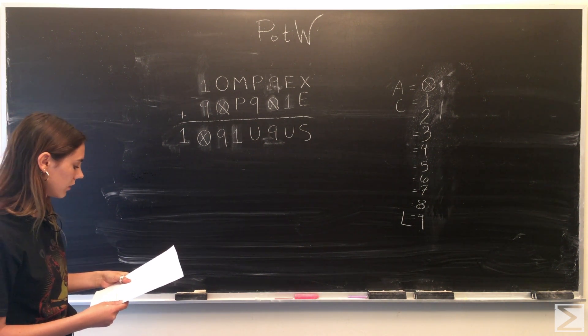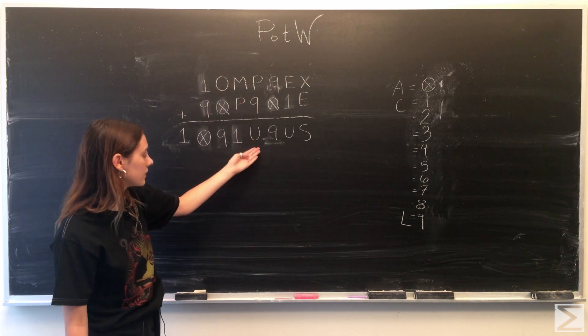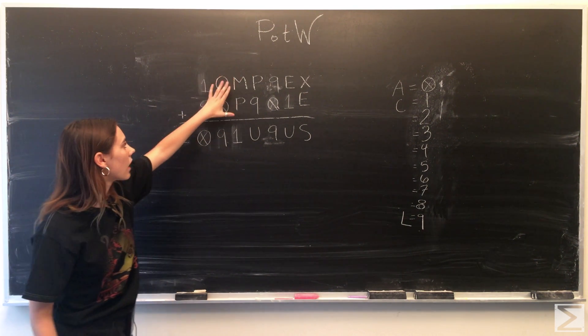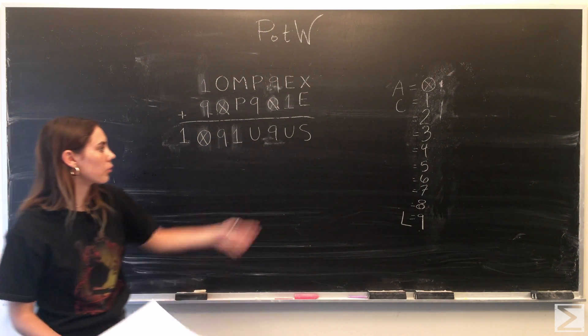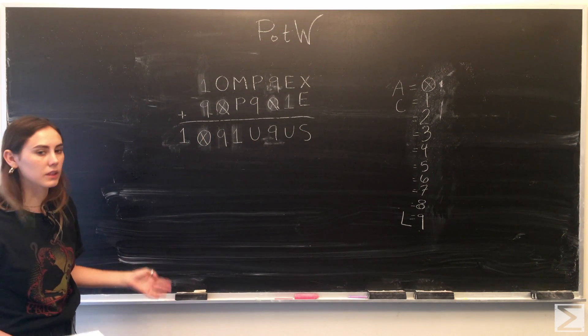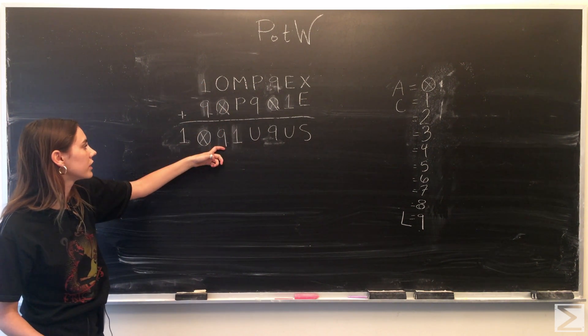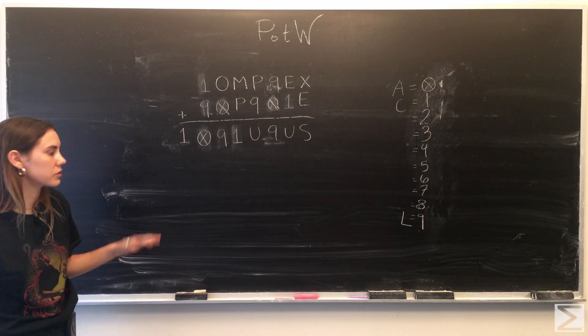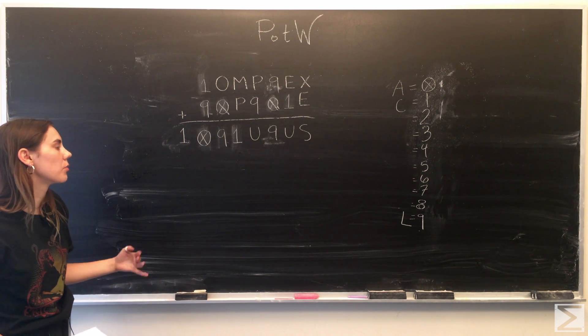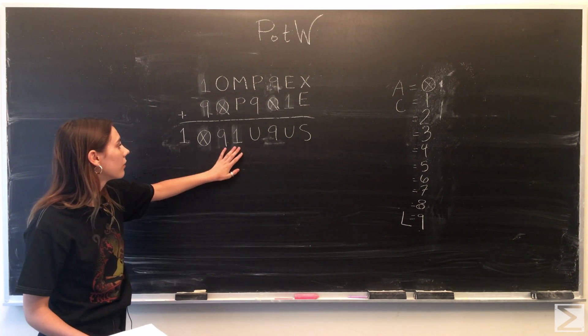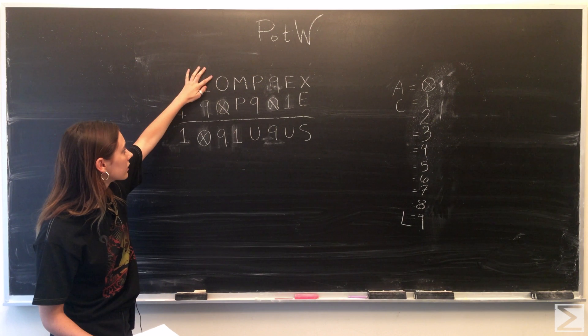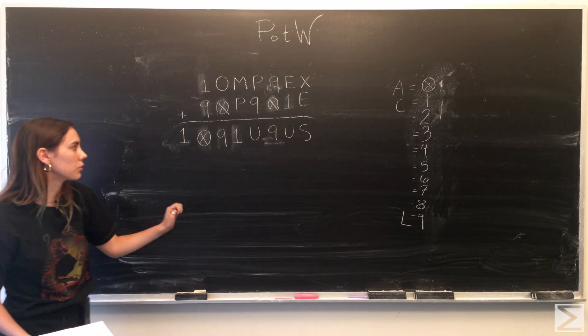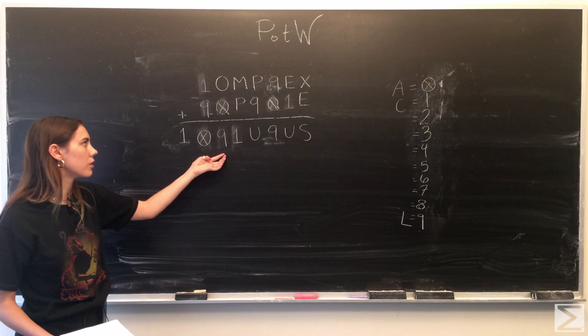Now we're going to look at this row. 9 plus P is equal to U. We're going to look at these two rows. Any options for M and P from what we have over here would need to be 11. M plus P needs to be 11 because we need to carry a 1 over here. Obviously M can't be 0 since A is 0, and P can't be 1 since C is 1. Those numbers are already taken. So they have to add up to 11. From that, we know that there will be a 1 carried over here. So this O right here would have to equal 8, since there's going to be a 1 carried over from M plus P equal to 11 to make this equation true.